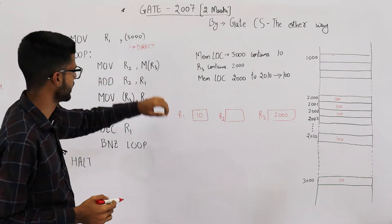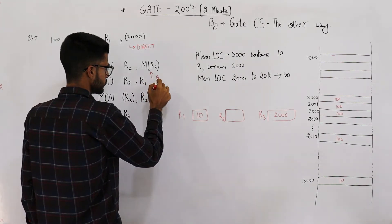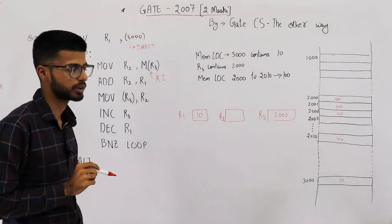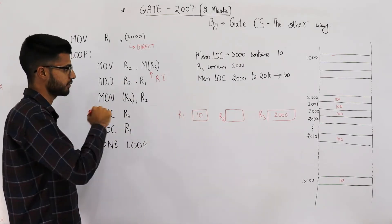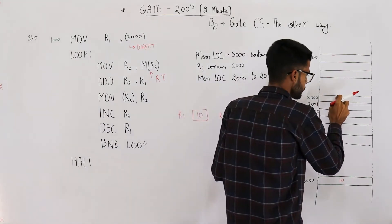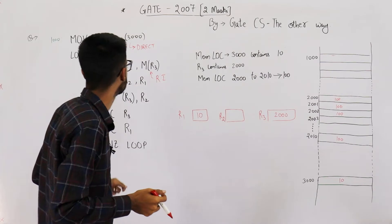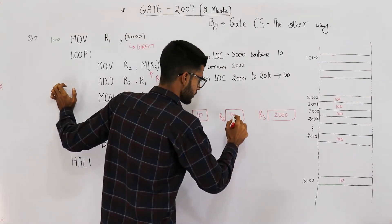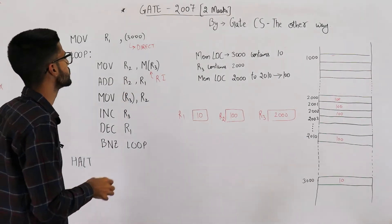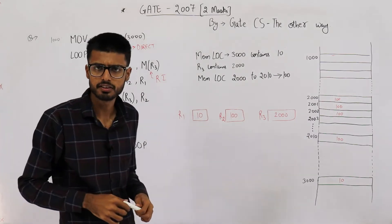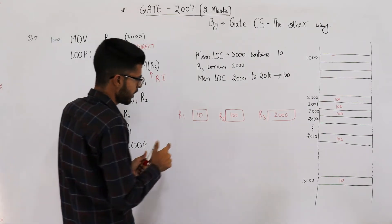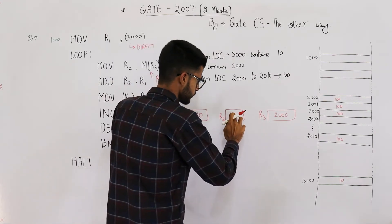The loop starts with MOV r2, M[r3] — this is register indirect mode. Whatever is present in r3 is the address; you go to that address in memory and fetch the data. r3 contains 2000, so you go to address 2000 and fetch the value 100, so r2 becomes 100. Then ADD r2, r1: 100 plus 10 is 110, so r2 now becomes 110.